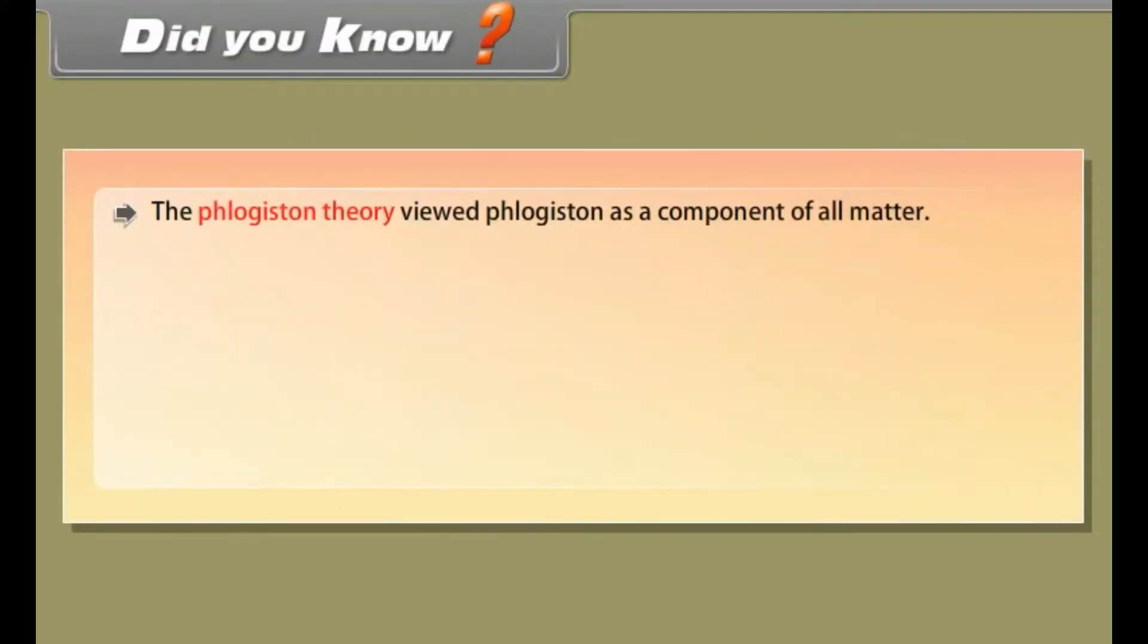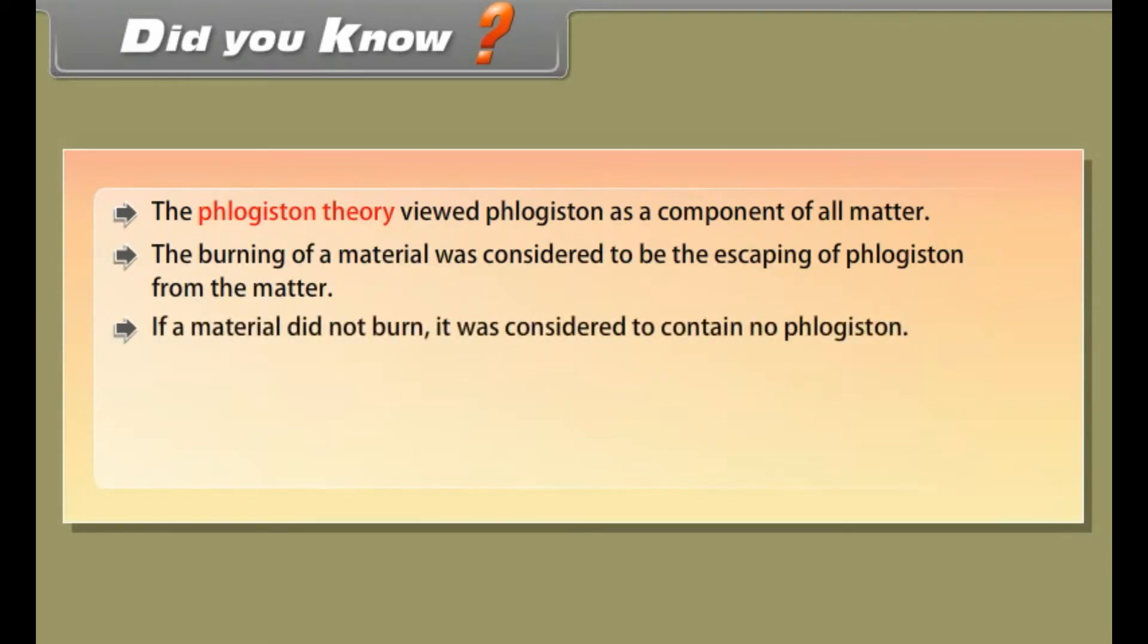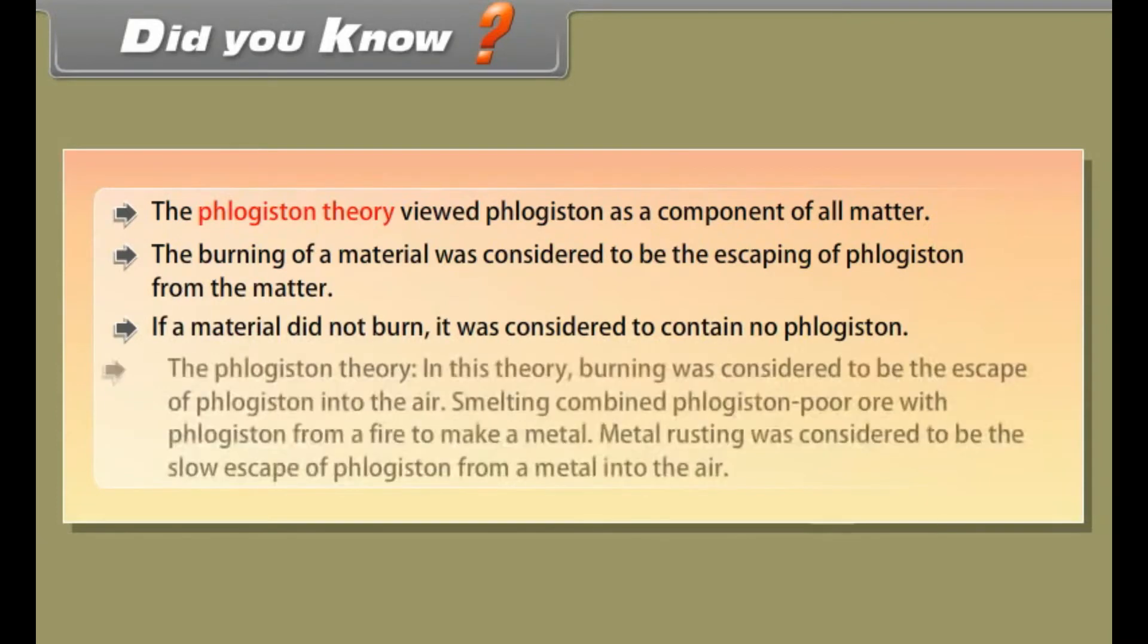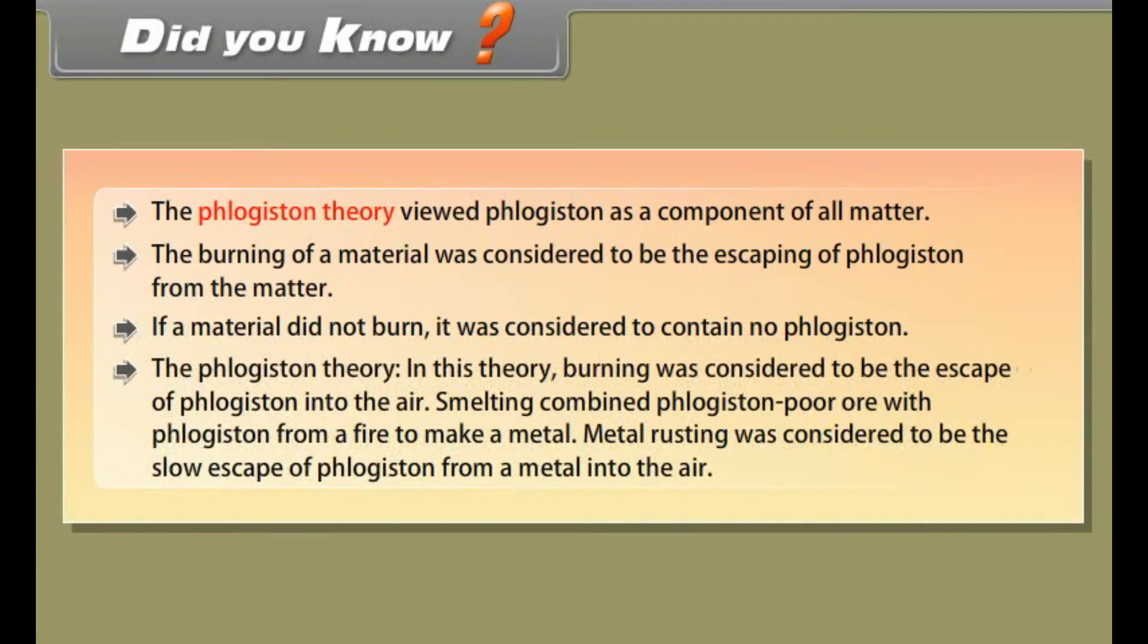Did you know: The phlogiston theory viewed phlogiston as a component of all matter. The burning of a material was considered to be the escaping of phlogiston from the matter. If a material did not burn, it was considered to contain no phlogiston. In this theory, burning was considered to be the escape of phlogiston into the air. Smelting combined phlogiston-poor ore with phlogiston from a fire to make a metal. Metal rusting was considered to be the slow escape of phlogiston from a metal into the air.